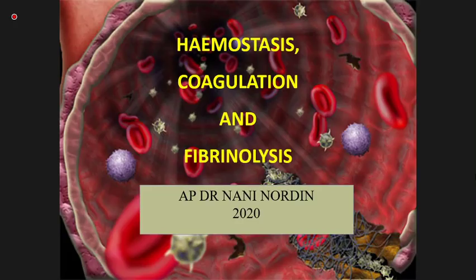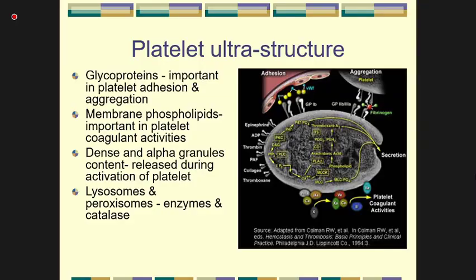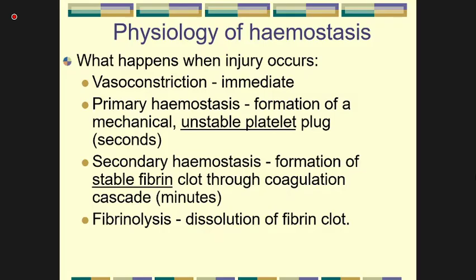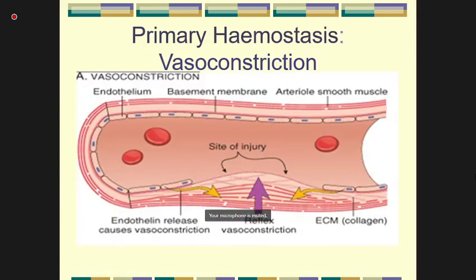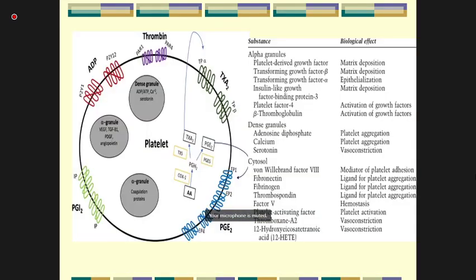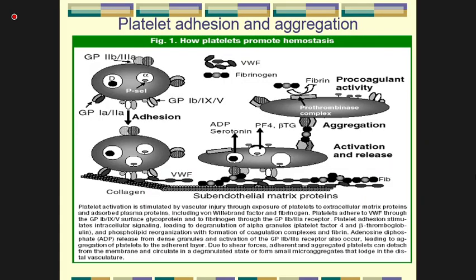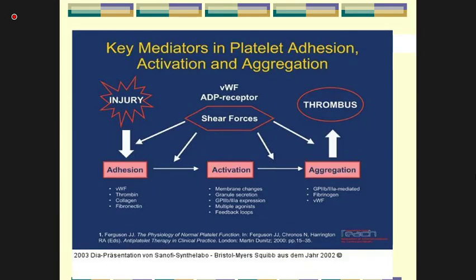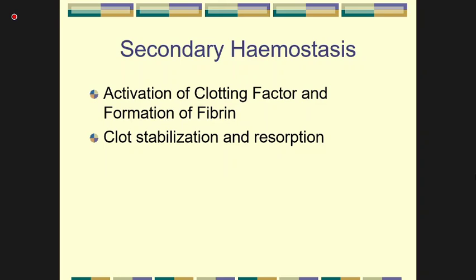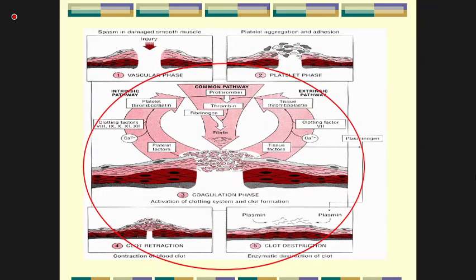Returning to secondary hemostasis: we will discuss the coagulation cascade, formation of stable fibrin clot, and resorption through fibrinolysis. The diagram shows the process — there are intrinsic and extrinsic pathways which eventually lead to the formation of fibrin laid out on the plug.